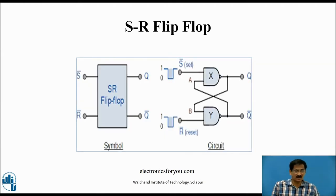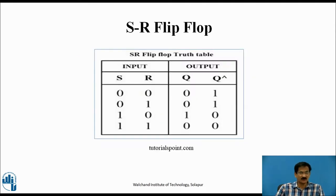Next, this is the symbol of the SR flip-flop. This is the truth table what we discussed. For S, R equals 0, 0, 0, 1, 0, 1, 1, 0, 1, 0, 1, 0, 1, 1, this is a prohibited condition.